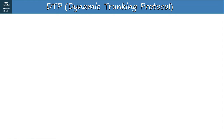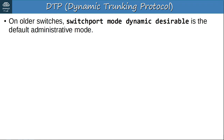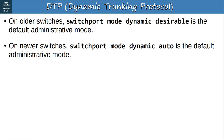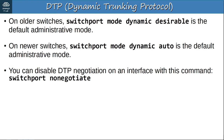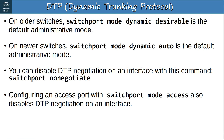On older switches, 'switchport mode dynamic desirable' is the default administrative mode — they will actively try to form trunk links. On newer switches, 'switchport mode dynamic auto' is the default. You can disable DTP negotiation with the 'switchport nonegotiate' command, which stops the interface from sending DTP frames. Configuring an access port with 'switchport mode access' also disables DTP. However, manually configuring trunk mode does not stop DTP frames unless you also use 'switchport nonegotiate'. It is recommended to disable DTP on all switchports.